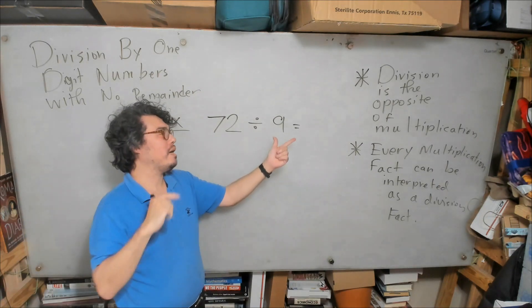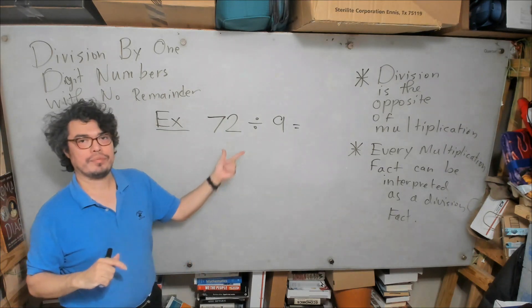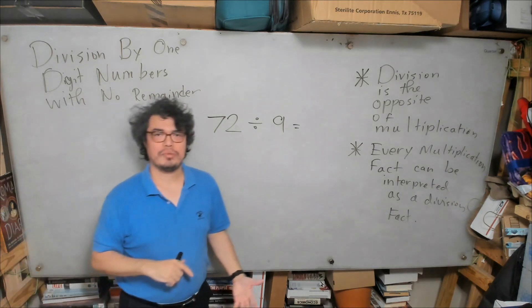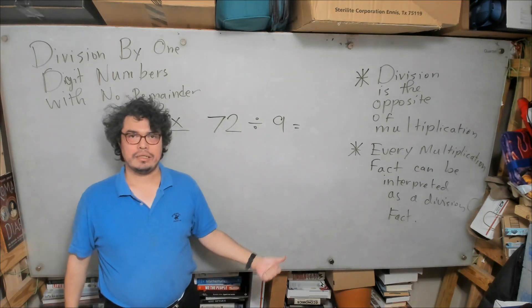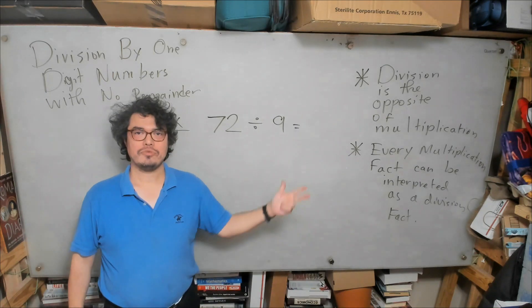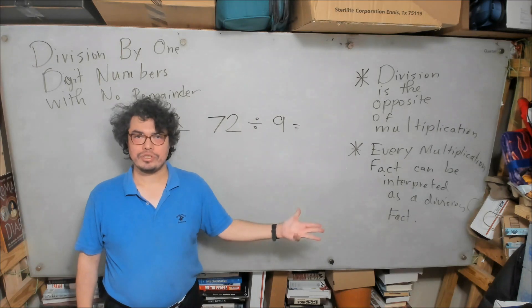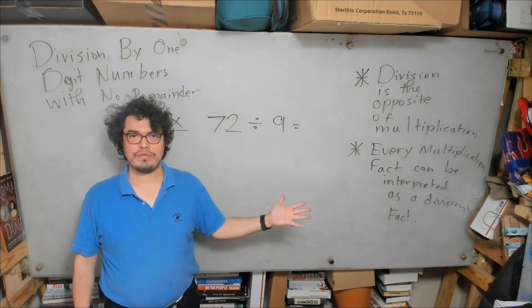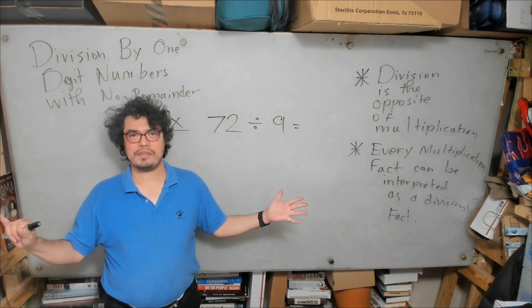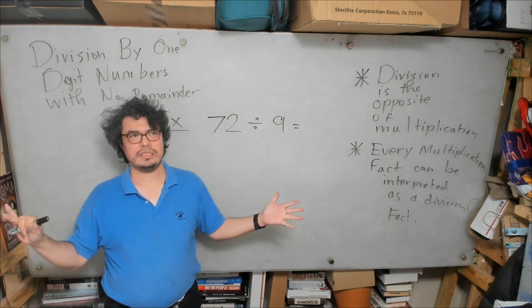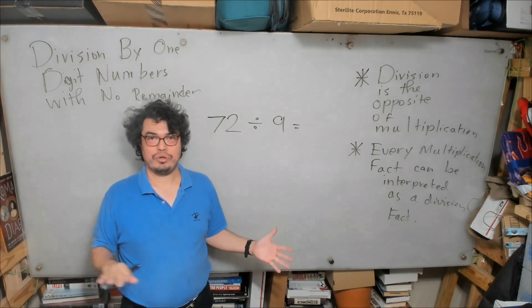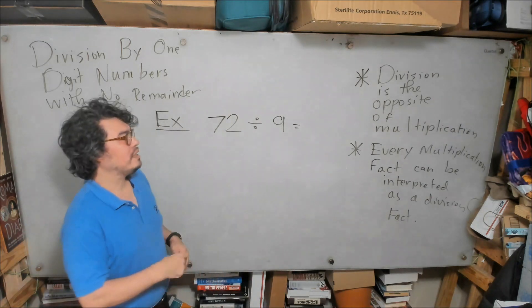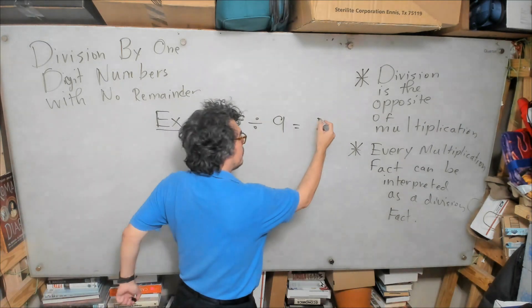What times 9 gives me 72? So we would look at the multiplication table for 9: 9 times 1 is 9, 9 times 2 is 18, 9 times 3 is 27, 9 times 4 is 36, 9 times 5 is 45, 9 times 6 is 54, 9 times 7 is 63, and 9 times 8 is 72. So we can see that this must be 8.